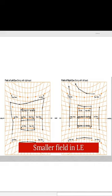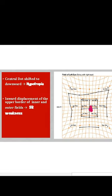Hi, let us interpret this Hess chart. The smaller field of recording is present in the left eye. The central dot is shifted downwards, that means the eye is hypertropic.